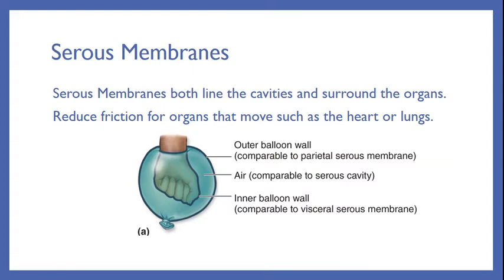Serous membranes both line the cavities and surround the organ — they do double duty. They reduce friction for organs that move, such as the heart or the lungs. The picture shown here is of a fist being pushed into a balloon, which is a really good example of how a serous membrane works. The fist could be an organ such as your heart. The heart is pushed into the balloon, and there's a layer of the balloon that clings very tightly to the heart — that is the inner layer of the serous membrane. The air of the balloon creates a cavity or a space not touched by the outer layer, showing a serous membrane lining both the cavity and the organ with a space in between.